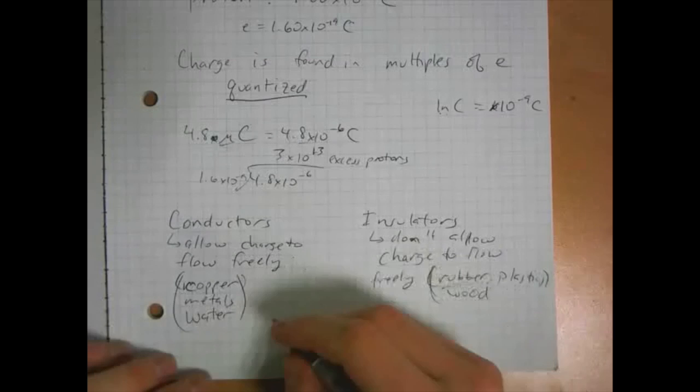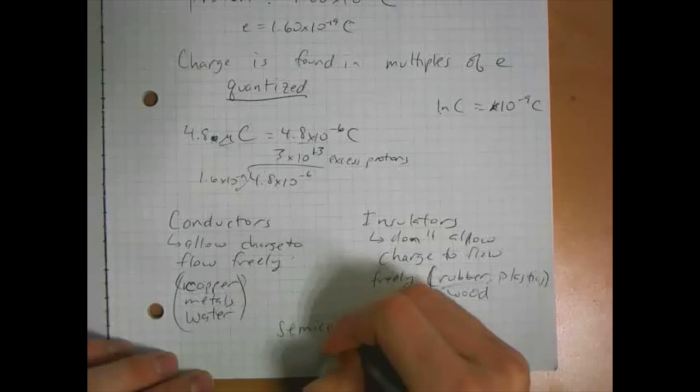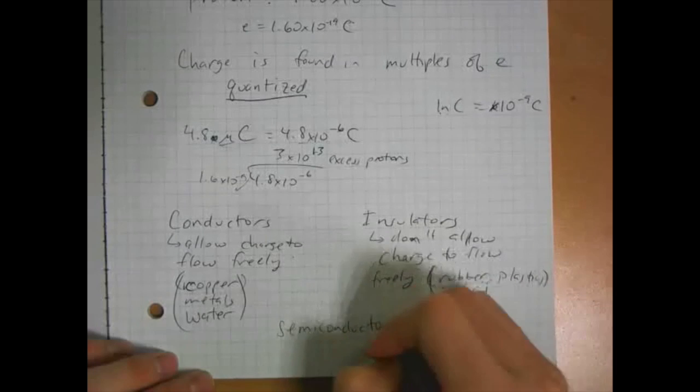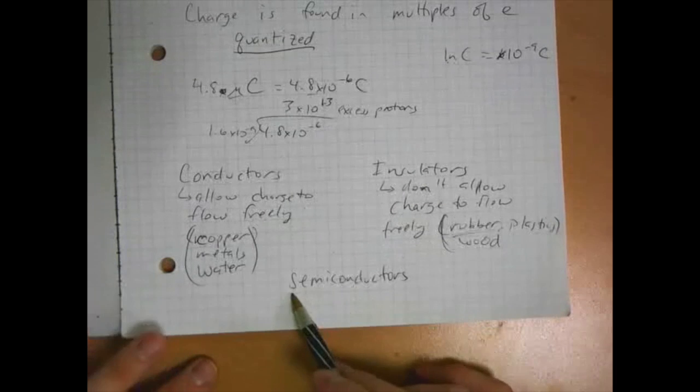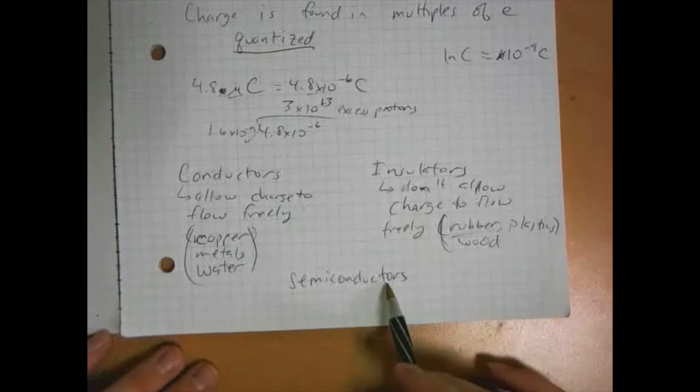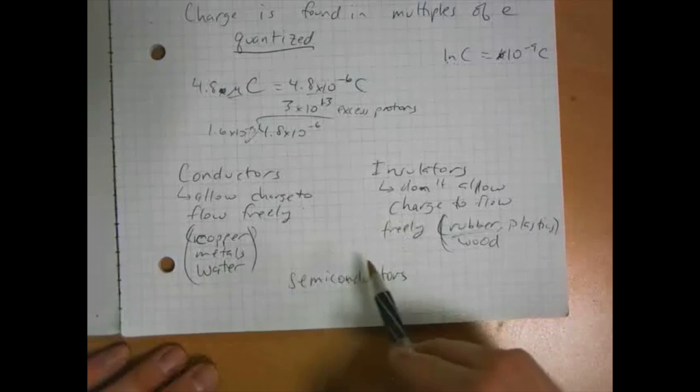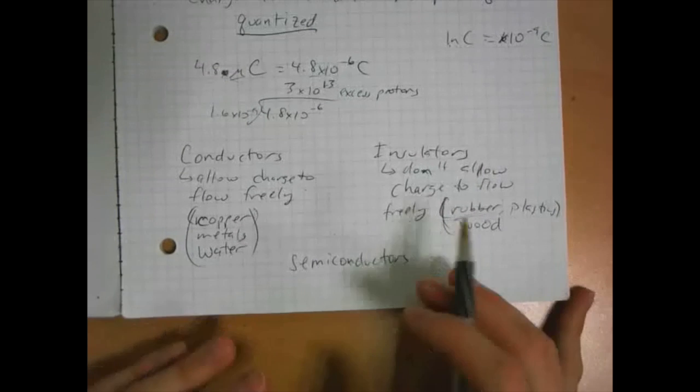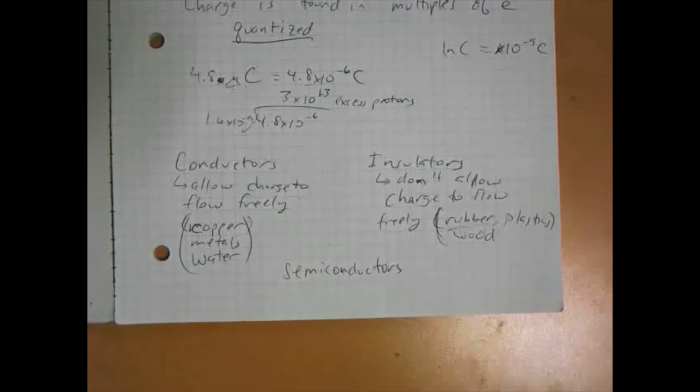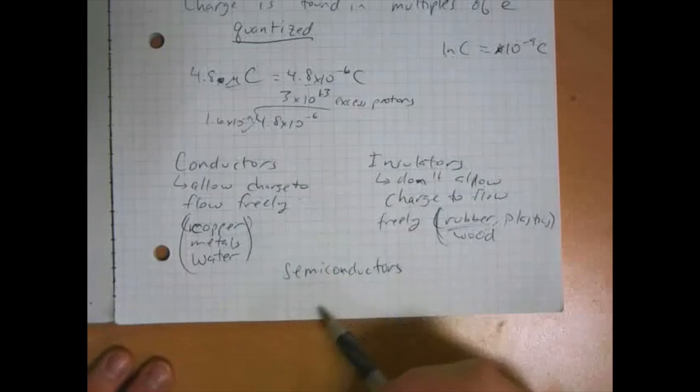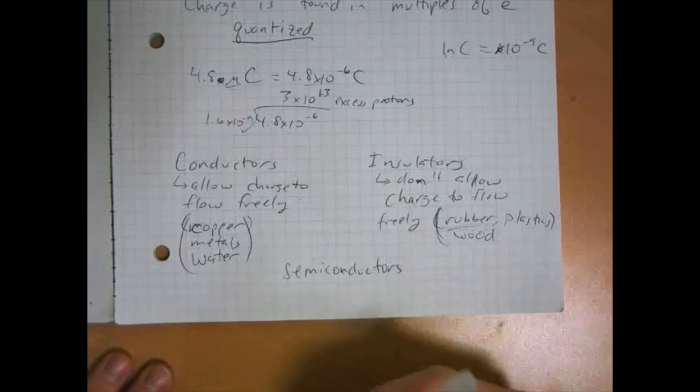Then there are also semiconductors which are in between. Some semiconductors, depending on the conditions, can act as conductors or insulators, and those turn out to be very useful in electronic devices. Silicon is used in computers because it is a semiconductor and it allows charge to flow or not flow depending on certain circumstances. In a circuit that's complex like a computer, sometimes you want the charge to flow and sometimes you don't.